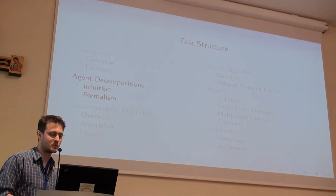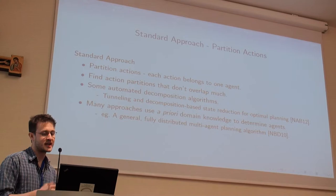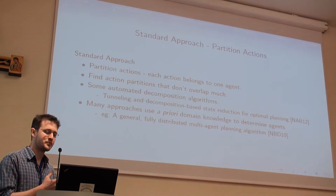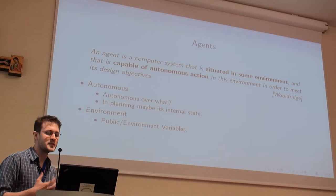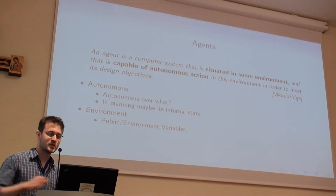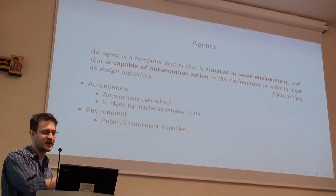The standard approach in multi-agent planning, or decomposition planning from the multi-agent perspective, is to partition the actions in the domain. Each action goes to an agent, and then you try to find sets such that these actions don't interact much between agents, thereby reducing the coordination problem. But coming at this from a multi-agent standpoint, there seems to be something missed. Common definitions of agents say they are situated in some environment and capable of autonomous action. When you just partition the action sets, you don't explicitly deal with the environment they're acting in, which is obviously important in most planning domains.